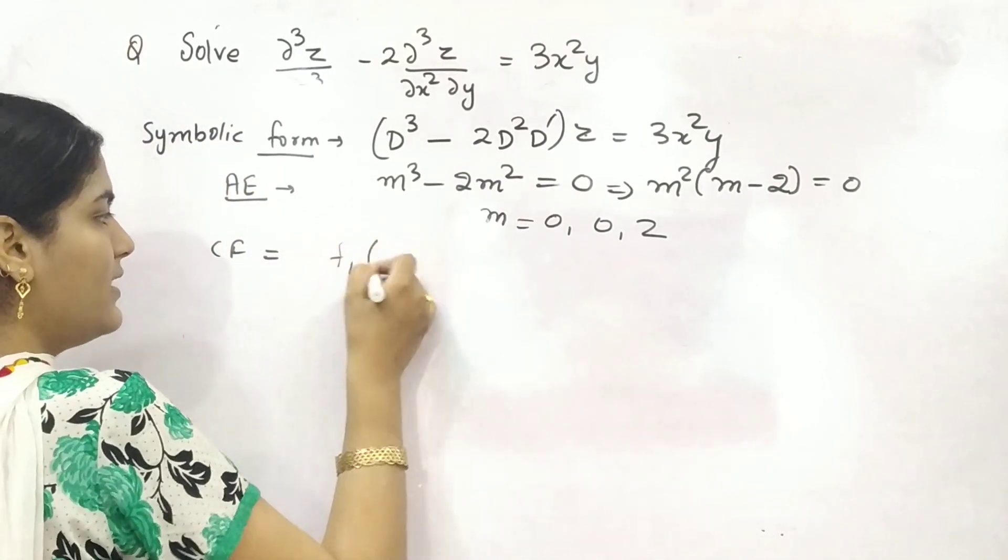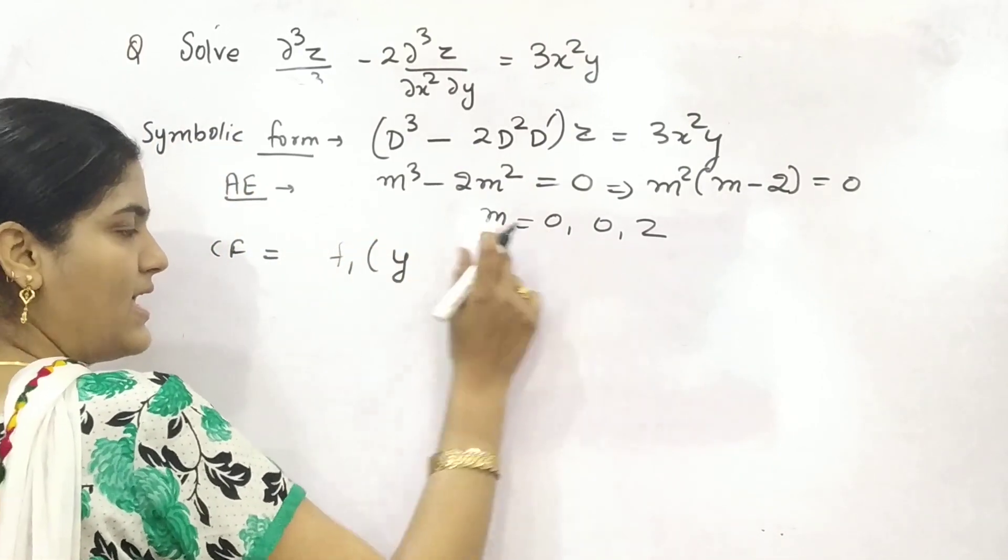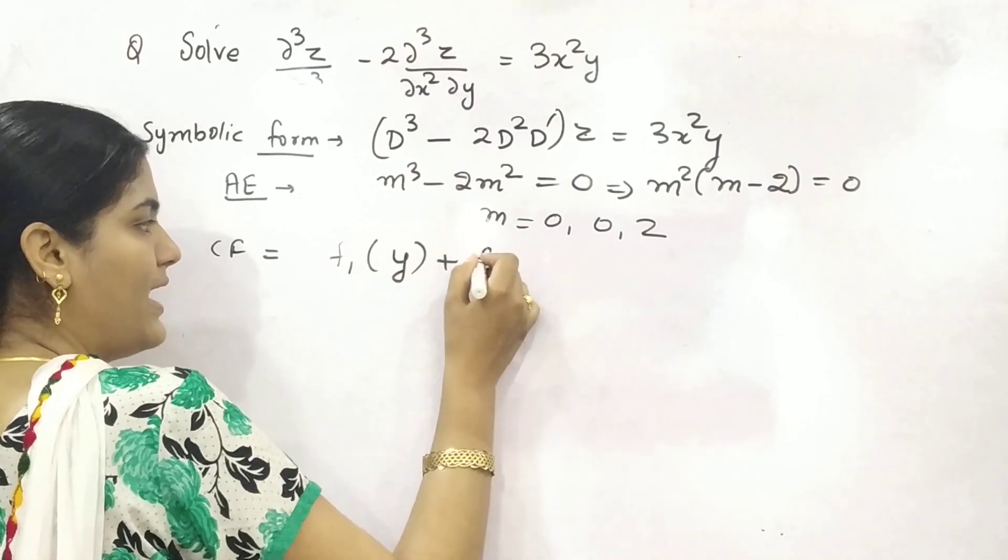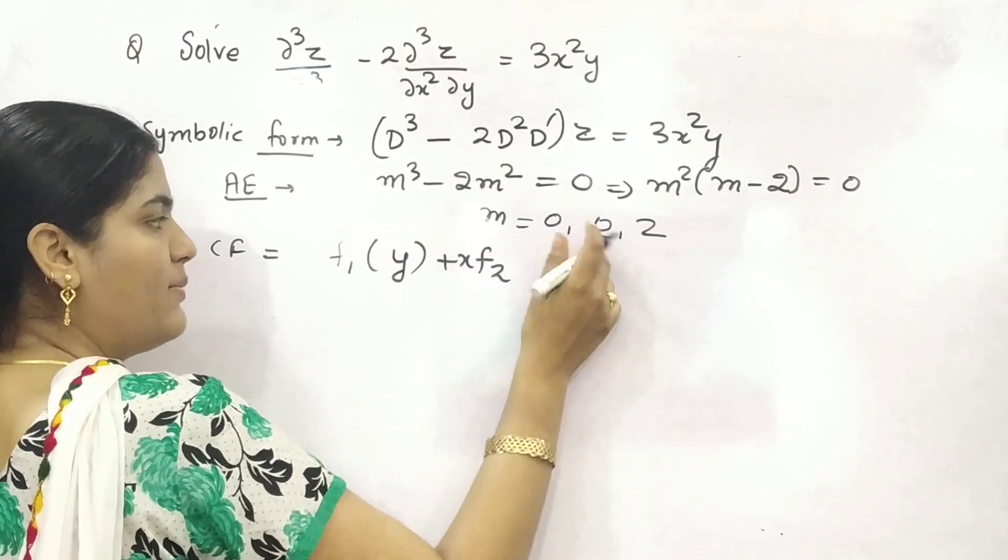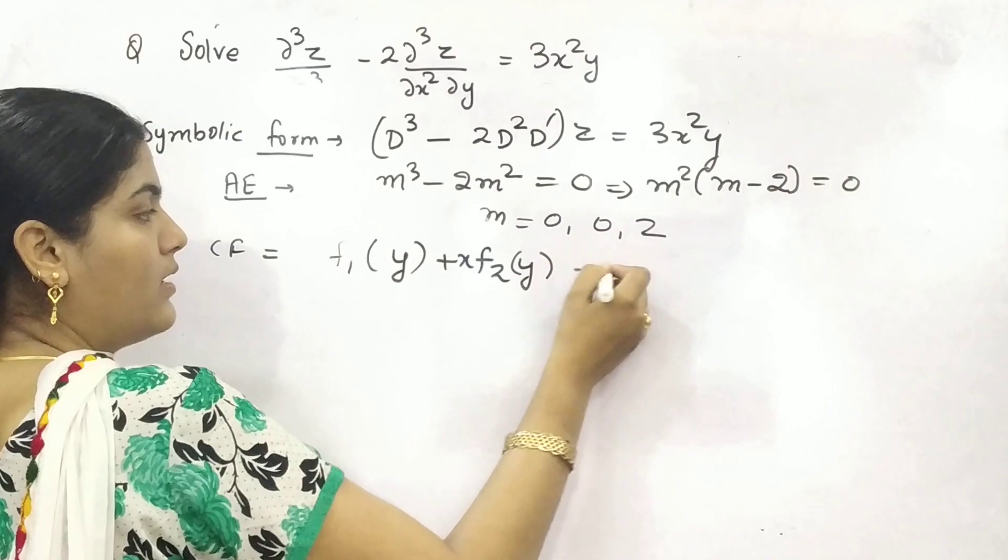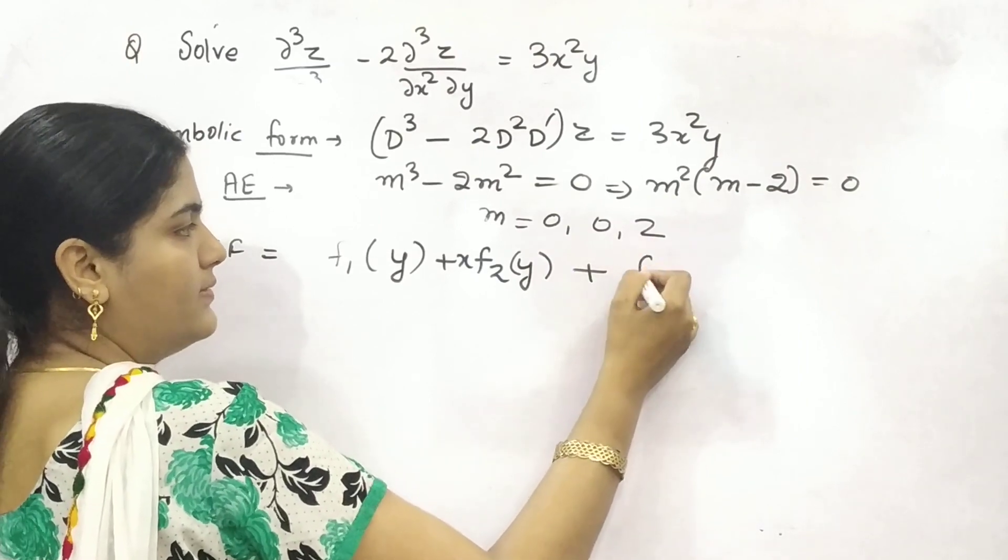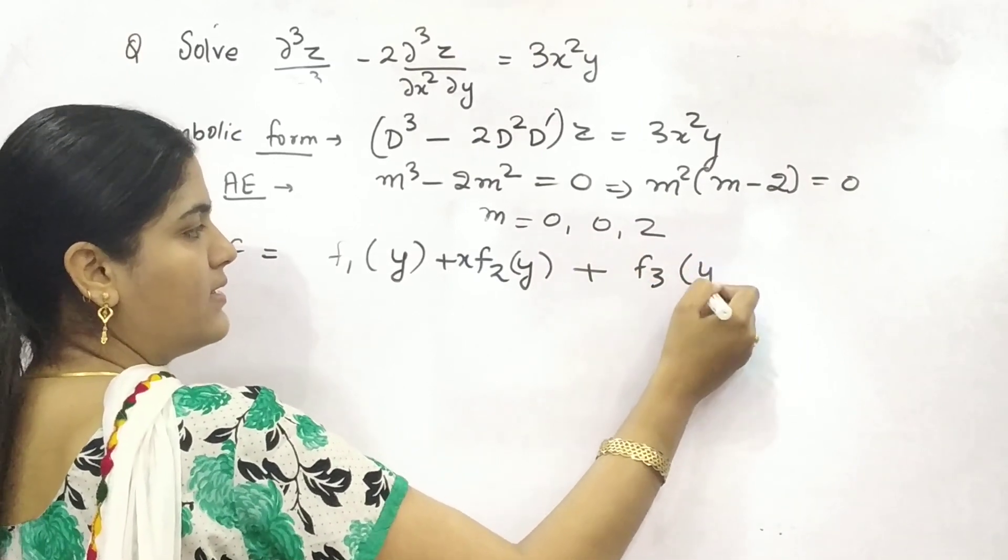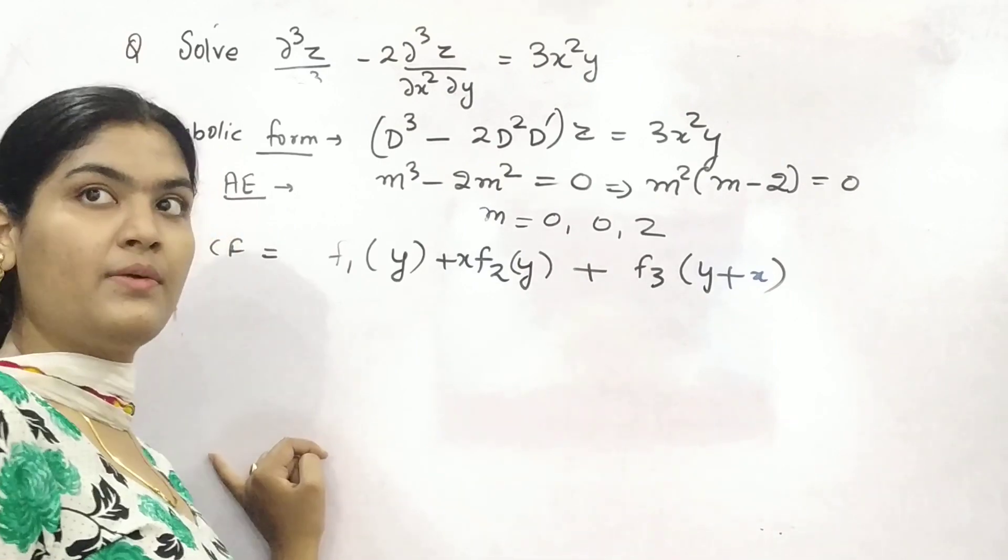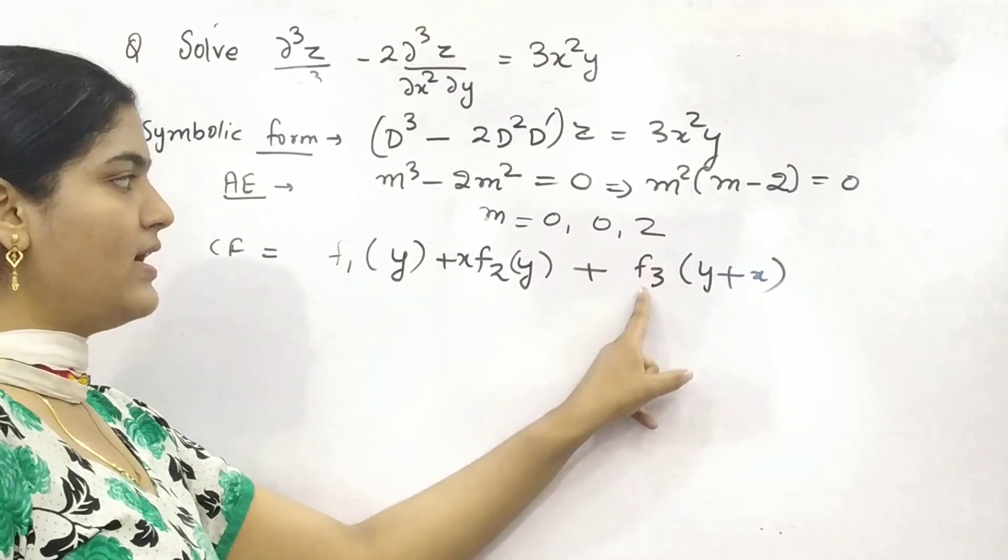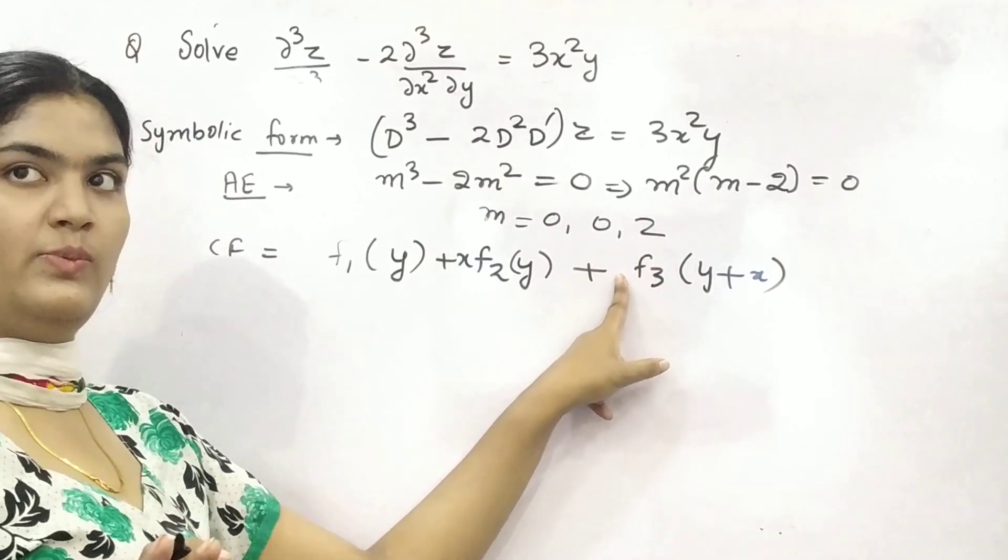Because two real roots and one distinct. So for real, the formula is f₁(y + mx), x is 0, x·f₂(y + mx) again. Then f₃(y + 2x). It is distinct, so we are not applying any of the variables.